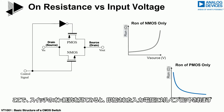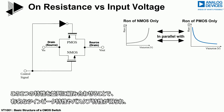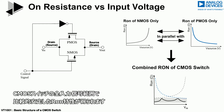If we now look at the on-resistance of the switch plotted against the applied input voltage, it can be seen that the resistance of the NMOS increases with positive voltage and the resistance of the PMOS increases with negative voltage. Thus the parallel combination of these two characteristics results in the well-known twin peak or bathtub characteristic, resulting in a relatively consistent Ron specification over the full input signal range of the CMOS switch.